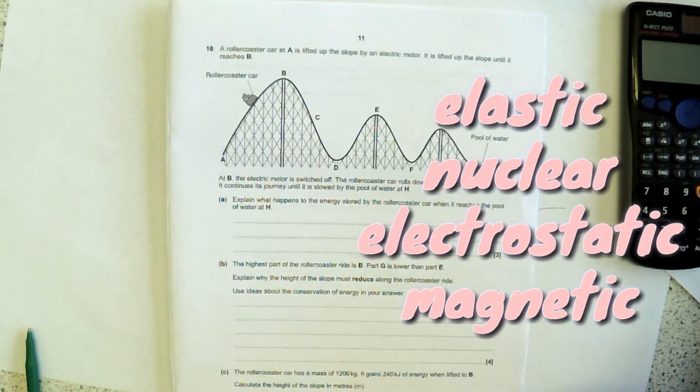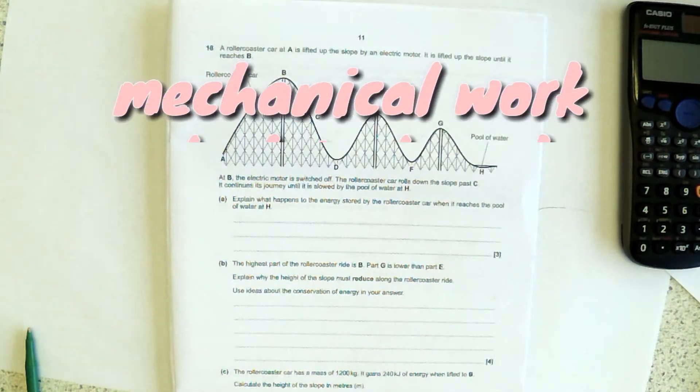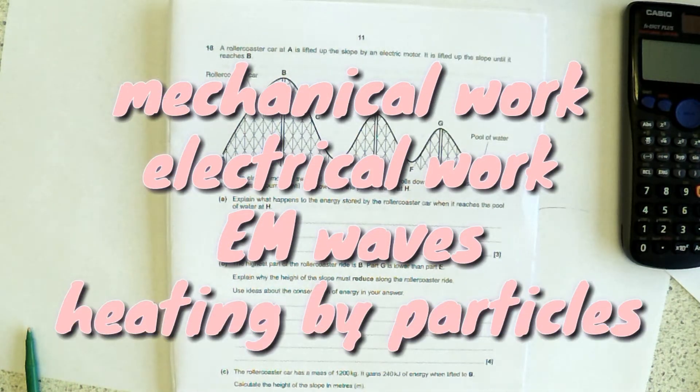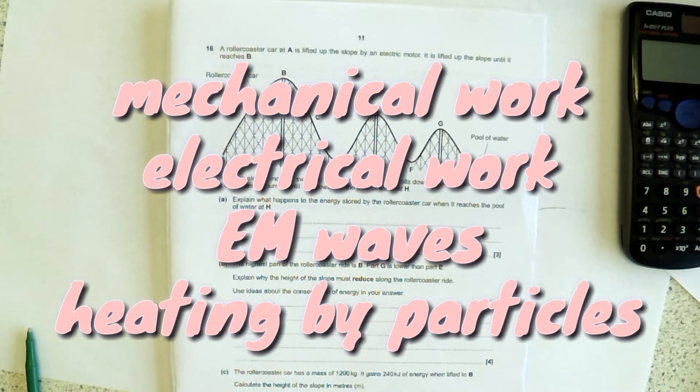Those are the eight stores. And the four types of transfers are by physical work, so that's by forces, by electrostatic work, electrical working, which is the forces between charges, and by heating by radiation, so that's EM waves, heating by particles, so that's conduction and convection. So there are only those eight stores and four transfers.